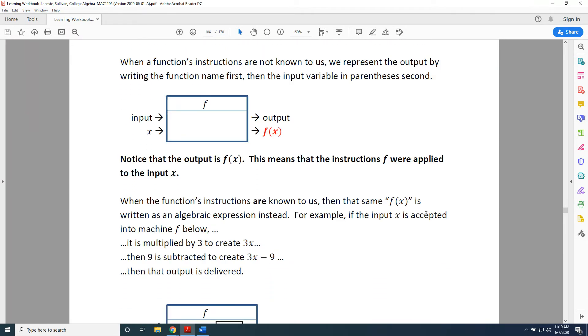When a function's instructions are not known to us, we represent the output by writing the function name first, then the input variable in parentheses second. For example, in this function, the input is x, the function name is f. Therefore, since we do not know what the instructions are, the output is written as f of x.